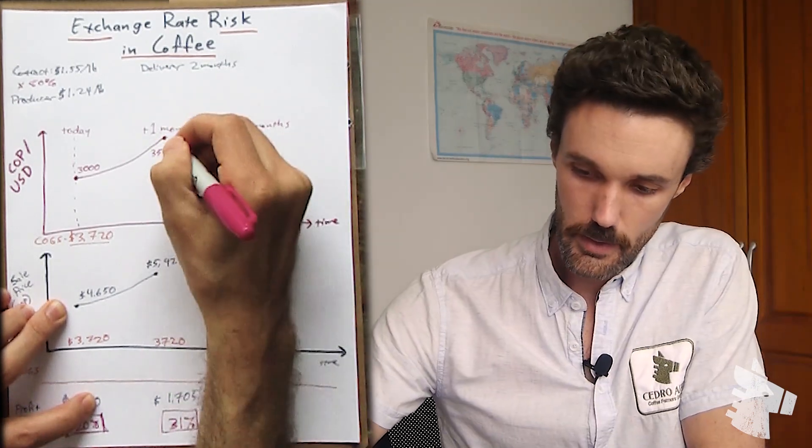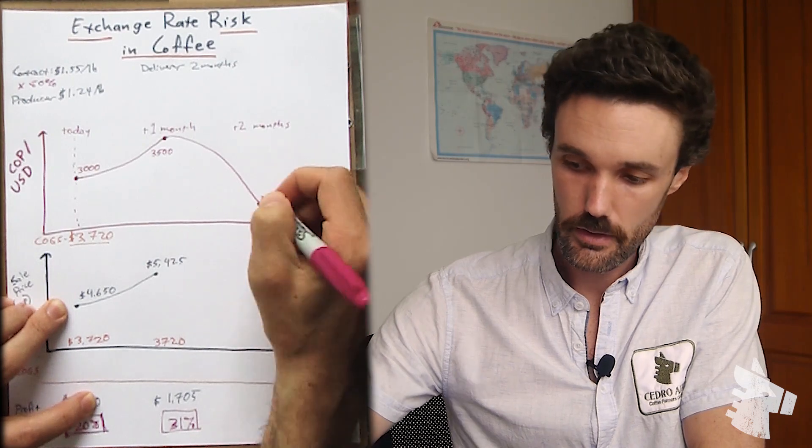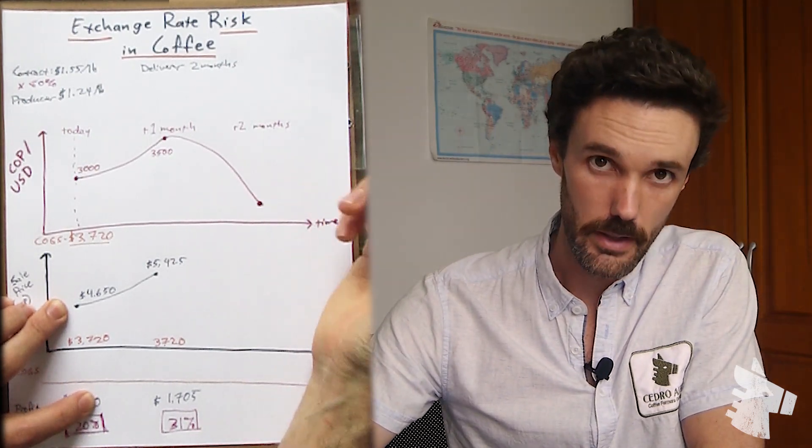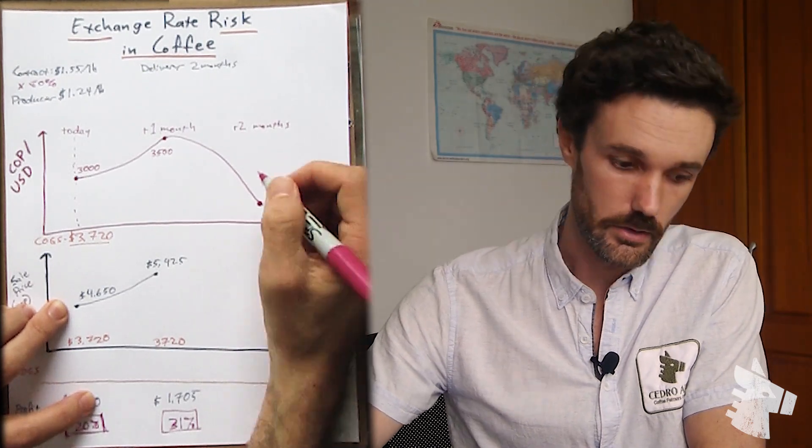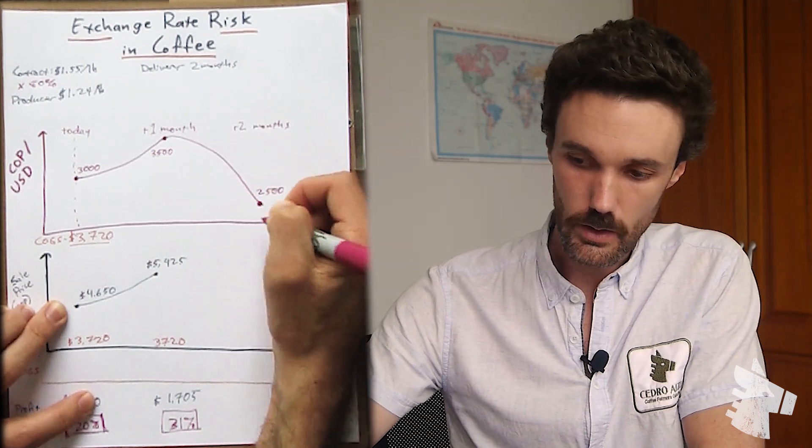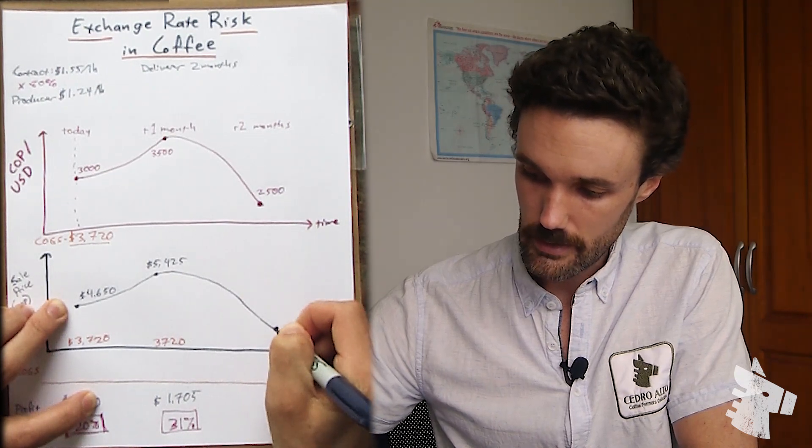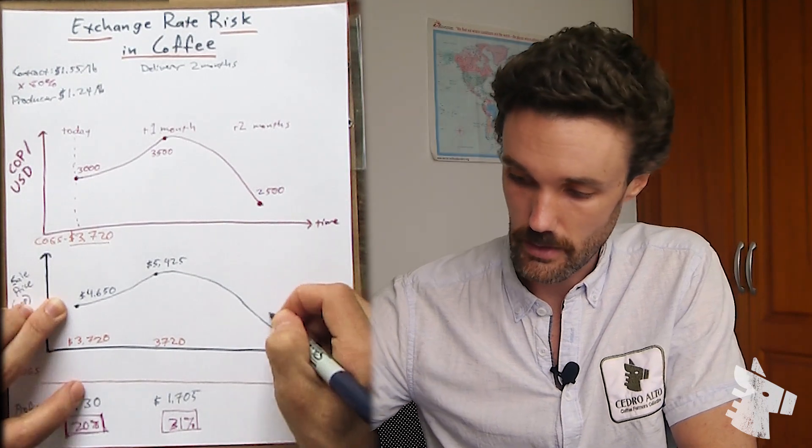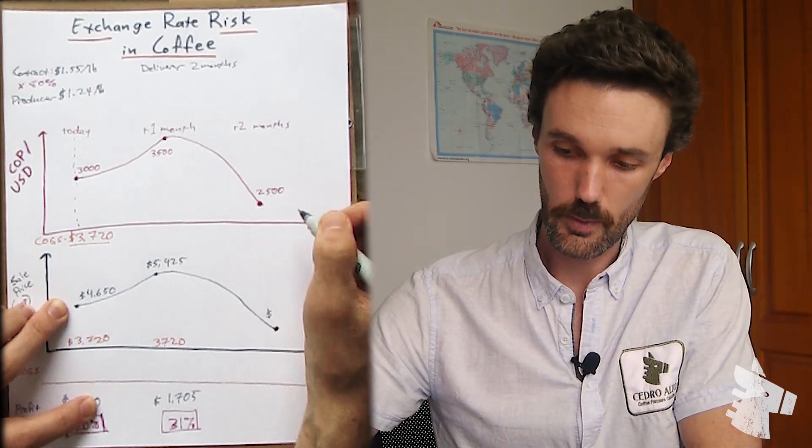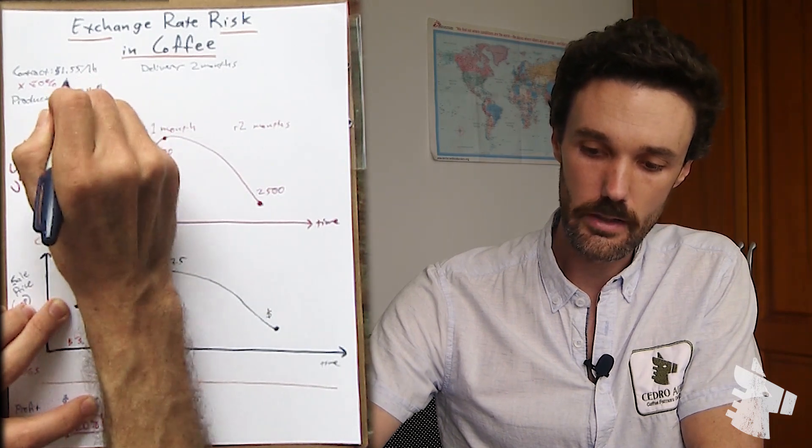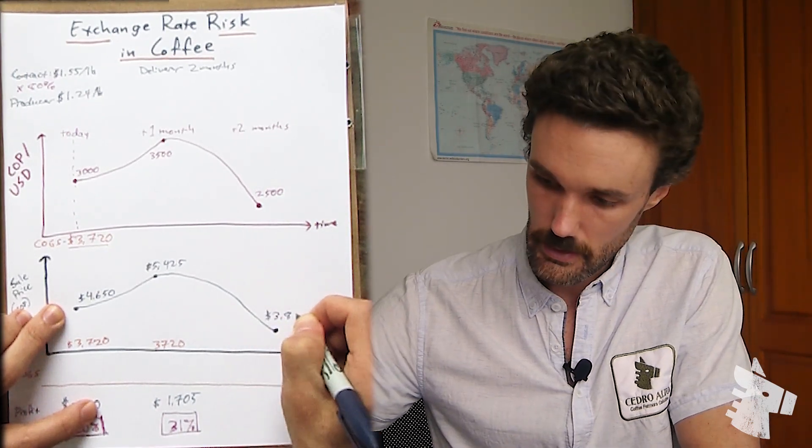In this case, let's say the Colombian peso then appreciates. I know this line is going down, but because this is how many Colombian pesos a dollar is worth, less Colombian pesos per dollar means the Colombian peso is worth more compared with the US dollar. So let's say the peso goes up or the dollar goes down to 2,500 Colombian pesos per US dollar. If that were to happen, our sale price in Colombian pesos would also go down because our sale price is in US dollars and therefore is dependent on that exchange rate. So if this were the case, if one US dollar were only worth 2,500 Colombian pesos now, our sale price is the same at $1.55, then our income as an exporter in Colombian pesos would only be 3,875.